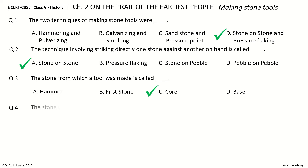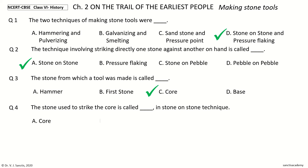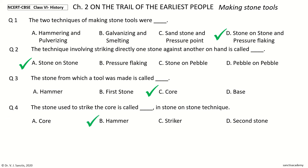Question 4: The stone used to strike the core is called dash in the stone on stone technique. The options are: core, hammer, striker, second stone. And the answer is hammer.